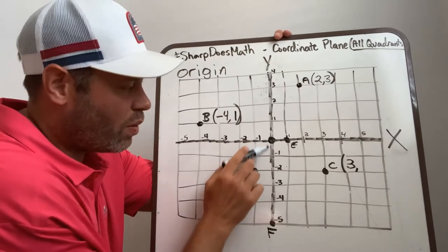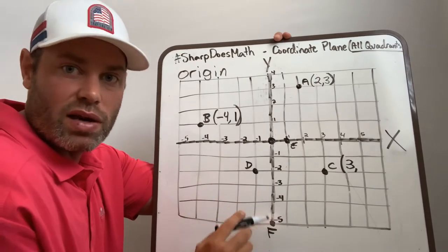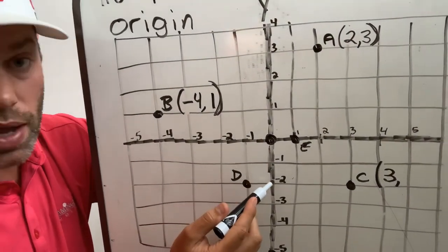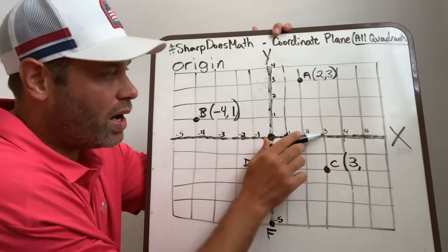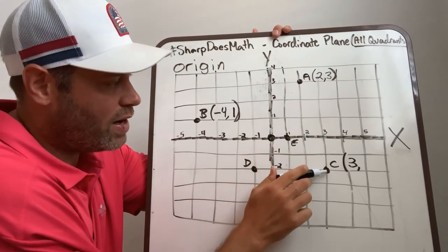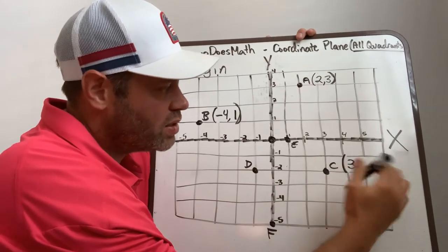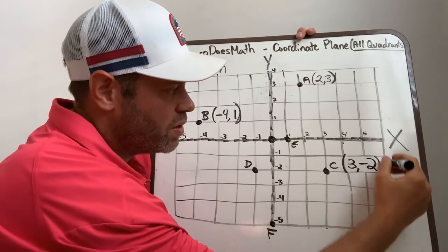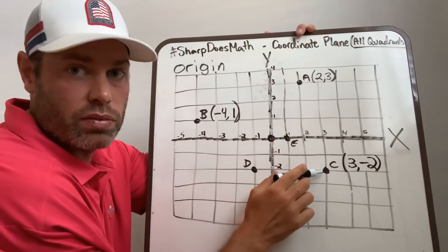But now we're going down on the y-axis, and these are negative numbers as well. Negative 1, negative 2, negative 3. So when I go to C, I went positive 3, and now I'm going negative 1, negative 2. That's on the negative 2. When we write this in, really important—make sure you have that negative symbol. Positive 3, negative 2.